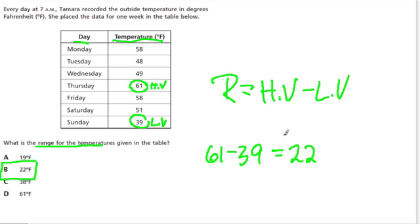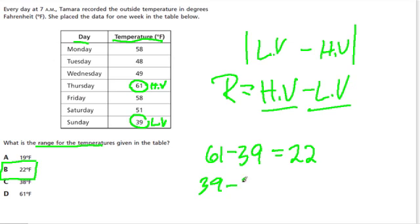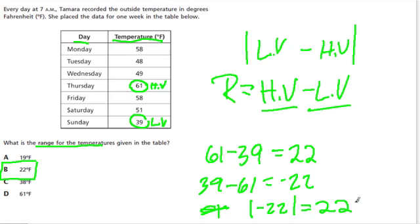So in range, just subtract the lowest value from the highest value. If you want to reverse it, you can subtract the highest value from the lowest value. Just take the absolute value of that. So that would be 39 minus 61, which is negative 22. And the absolute value of negative 22, it says how far is that number from 0? Well, negative 22 is just 22 away from 0, so the absolute value of that is 22.